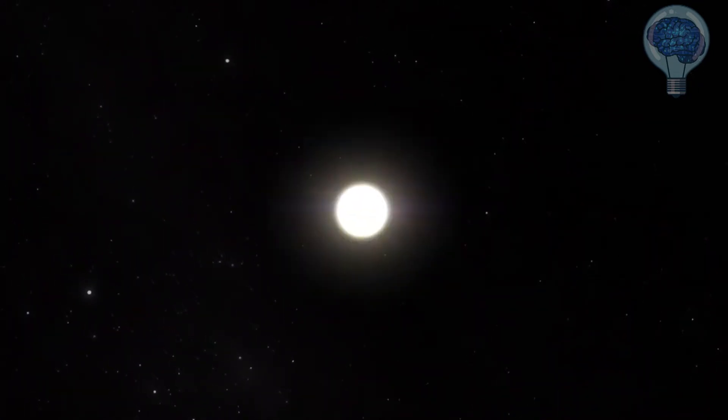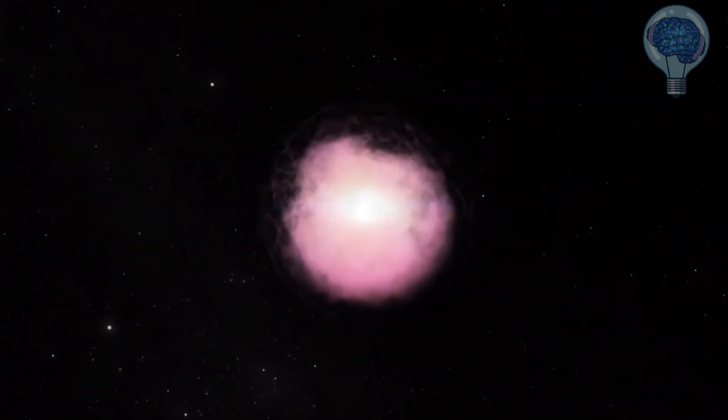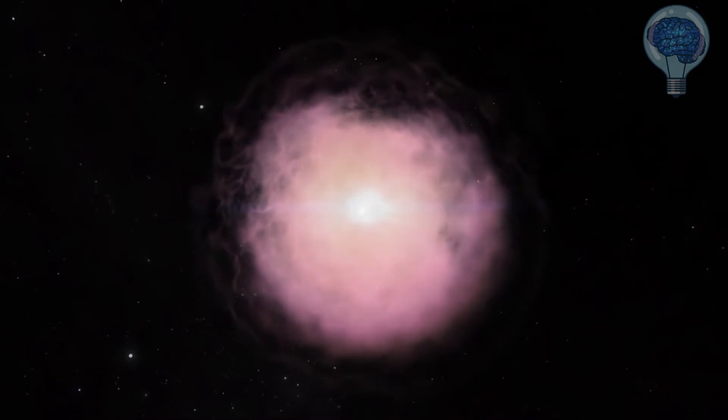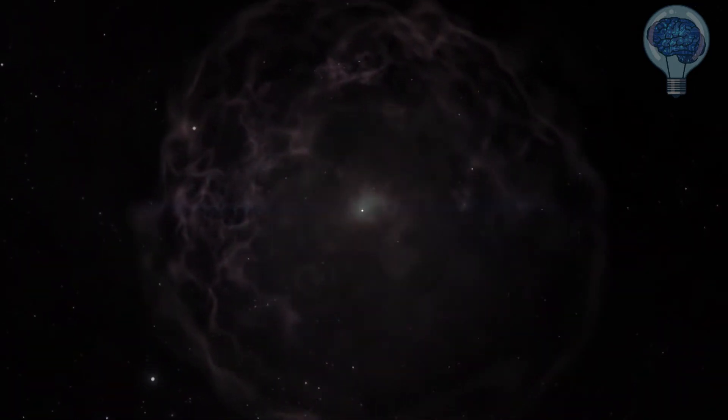If a star is big enough, at the end of its life it will eject its outer layers at high velocity in a massive explosion, while the inner core collapses into a very tiny space, creating a gravity well so great that light can't escape - literally a black hole.